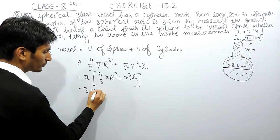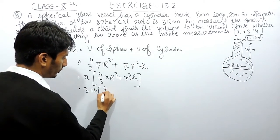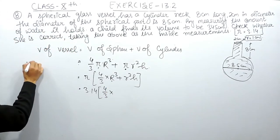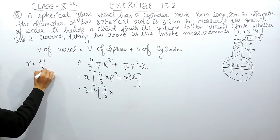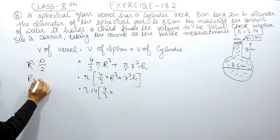So the value of pi you have to use as 3.14. This will be 4 upon 3. The radius for this sphere - the radius is half of the diameter, this is capital R and d is given to you as 8.5 upon 2.